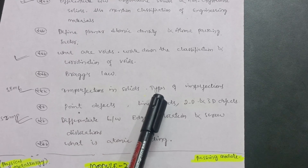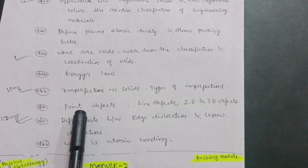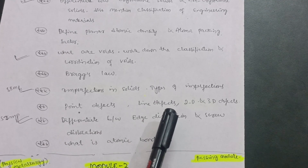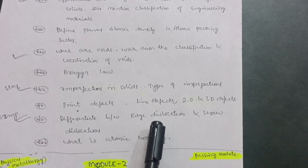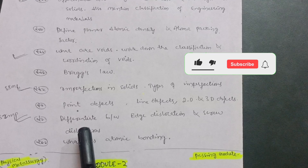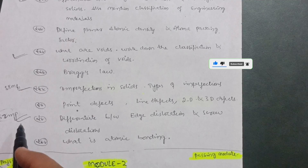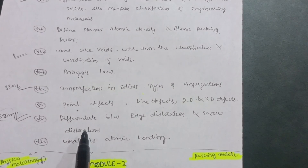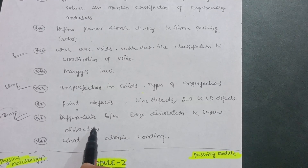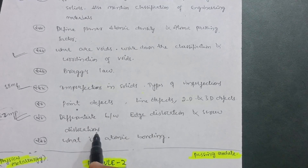You should have knowledge about point defects, line defects, 2D and 3D defects. Then, differentiate between edge dislocation and screw dislocation — this is the most important question as far as material science is concerned. It was frequently asked in examinations under the 17, 18, and 15 schemes, so this time it will definitely appear in the examination.